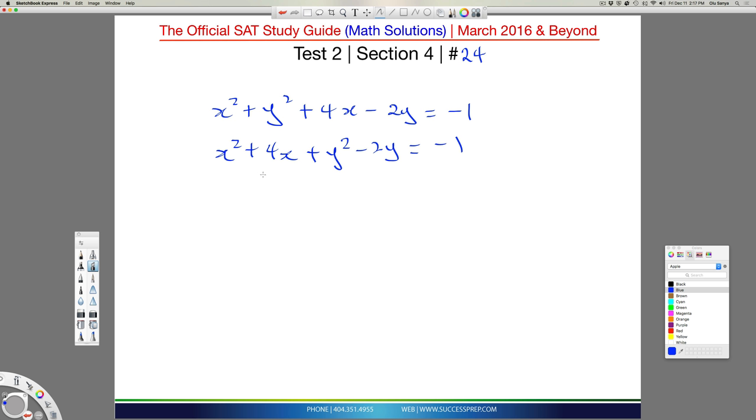Now, you might be familiar with the concept of completing the squares, and that's essentially what we need to do here. We need to complete the squares of this, because you could see that this is kind of like a developing quadratic, but it's incomplete, so we need to complete it. And we're going to leave this minus 1 on this side. So watch how I do this.